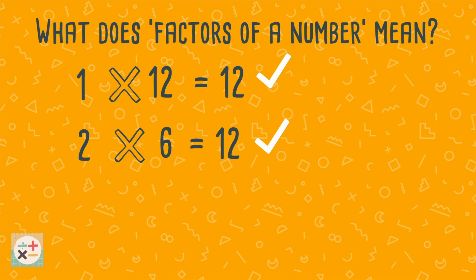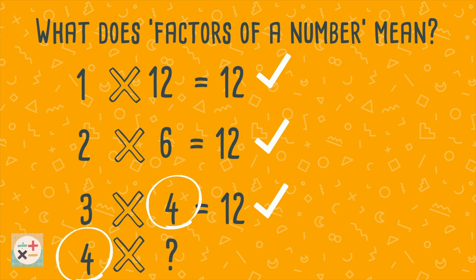Repeat this process, increasing the number by 1 each time. We can stop when we find that we have a repeated number. So here we have found all of the factors of the number 12.